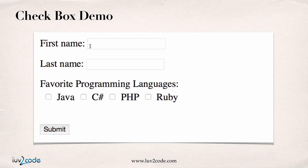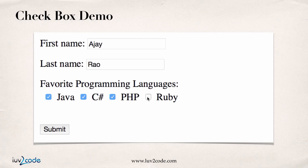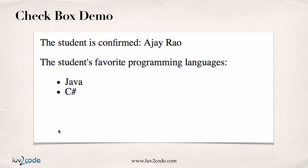Let's start off with the checkbox demo. The user can enter their first name and last name, and the new thing here is that they can actually choose multiple programming languages — that's thanks to checkboxes. Previously, they could only use radio buttons and choose only one language, but now they can choose multiple languages, which gives them more flexibility because we may personally like more than one language.